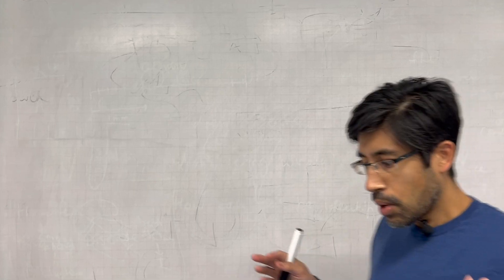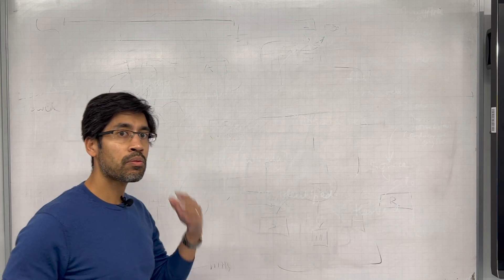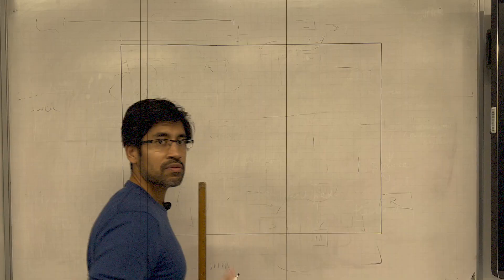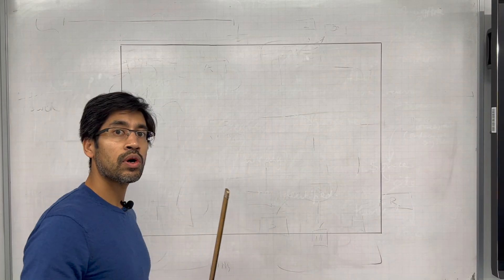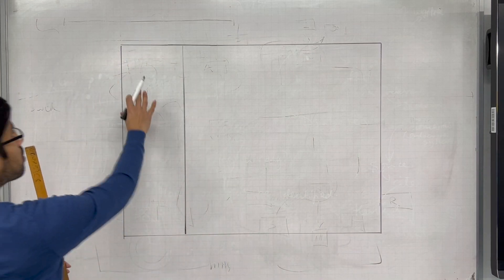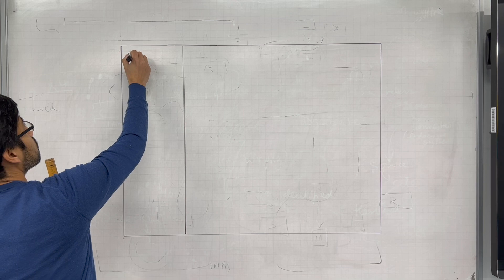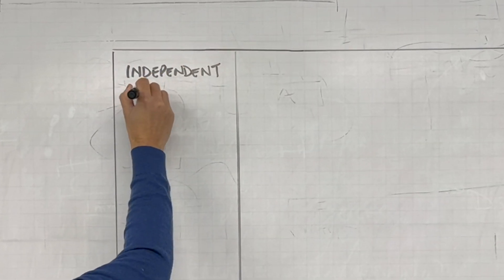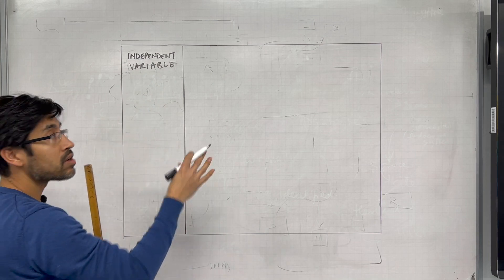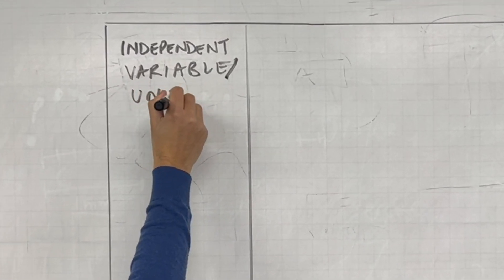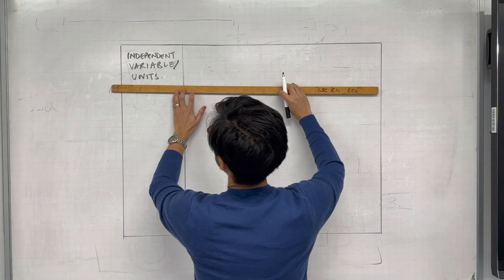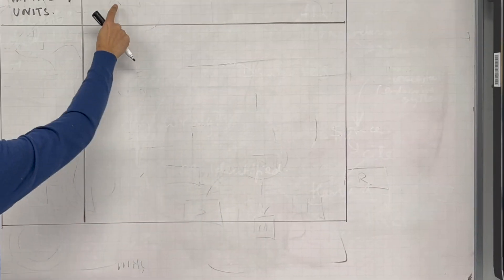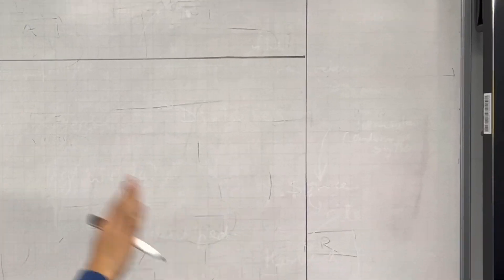First rule of tables is we've got to draw a bounding box with a ruler. So I'm going to do that first. Now that we've got our box, what goes where? So this is where my independent variable will go, and I will title it — independent variable and units, if required. Then the dependent variable is going to go on the right-hand side columns.